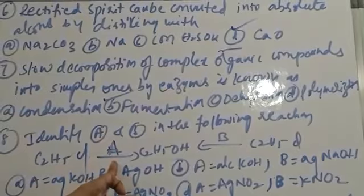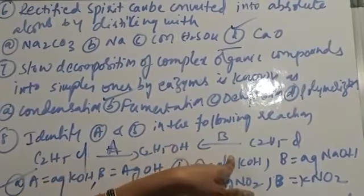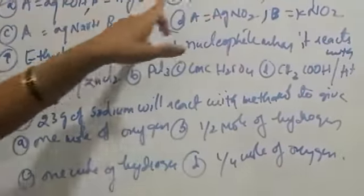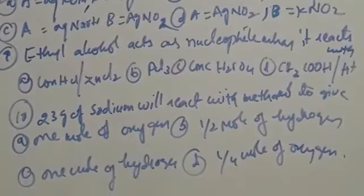Identify A and B in the following reaction: ethyl chloride in the presence of A forms ethyl alcohol, and the same reaction takes place when reagent B is used. This is a nucleophilic substitution reaction. Ethyl chloride in the presence of aqueous potassium hydroxide (KOH) or silver hydroxide (AgOH) produces ethyl alcohol. So A is aqueous KOH and B is AgOH.